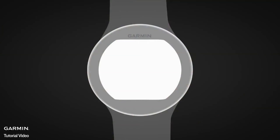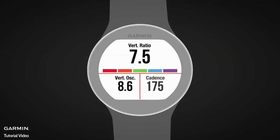During your running activity, scroll down until you see either of the running dynamics screens. The color gauge applies to the top metric. The position of the pointer on the gauge indicates how your value compares to other runners.